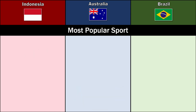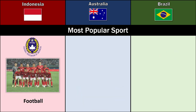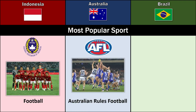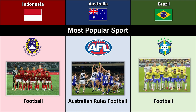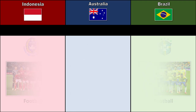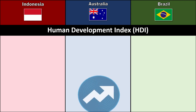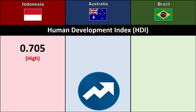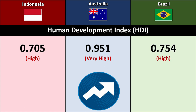Most Popular Sport: Football (Indonesia), Australian Rules Football (Australia), Football (Brazil). Human Development Index: Indonesia 0.705 (High), Australia 0.951 (Very High), Brazil 0.754 (High).